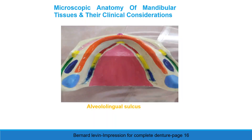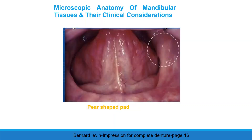Alveolingual sulcus extends posteriorly from the lingual frenum to the retromylohyoid curtain. It is covered with thin non-keratinized mucosa; the submucosa contains loose connective tissue fibers mixed with elastic fibers, allowing free movement. It is divided into three parts: anterior (lingual to premylohyoid fossa), middle (premylohyoid fossa to the distal end of the mylohyoid ridge), and posterior (end of mylohyoid ridge to retromylohyoid curtain). The pear-shaped pad is the posterior end of the crest of the lower ridge; it is non-keratinized, contains fibers of the buccinator and temporal muscles, never resorbs, and is thus considered a primary stress-bearing area in the mandible.